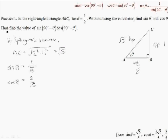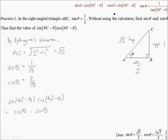The last part of the question says: find the value of sin(90° - θ) multiplied by cos(90° - θ). sin(90° - θ) multiplied by cos(90° - θ) can be converted to cosθ multiplied by sinθ, using the formulas on the top of the screen: sin(90° - θ) is cosθ and cos(90° - θ) is sinθ. Substituting our values, this is 2 over root 5 multiplied by 1 over root 5, which simplifies to 2 over 5.